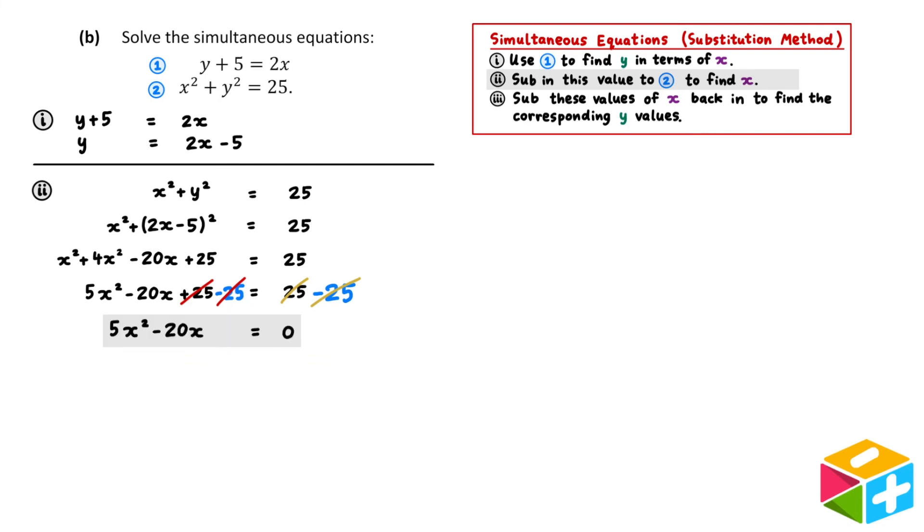We are now left with the equation, 5x squared minus 20x is equal to zero. One approach here would be to use the quadratic formula. However, if we're clever, there's a much quicker approach. We can spot that there's a common factor of 5x on the left-hand side. When we factor out a 5x from 5x squared, we're left with x. And when we factor out 5x from minus 20x, we're left with minus 4.